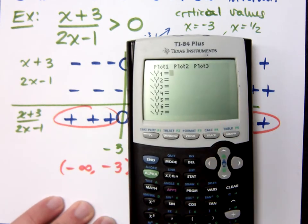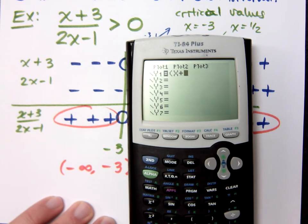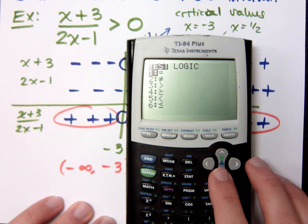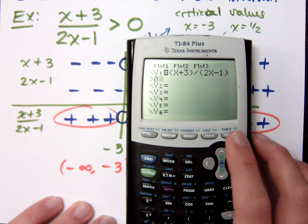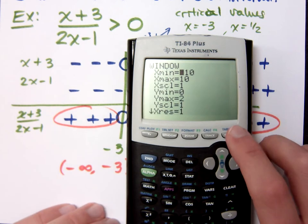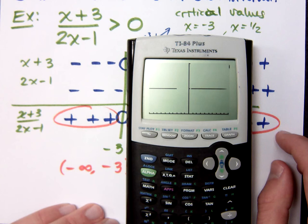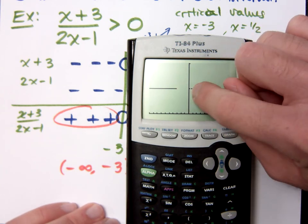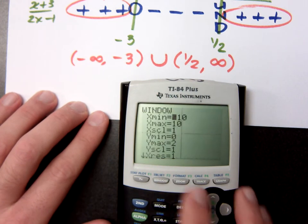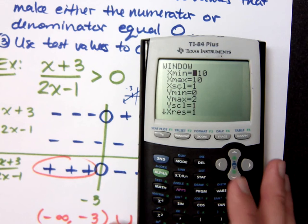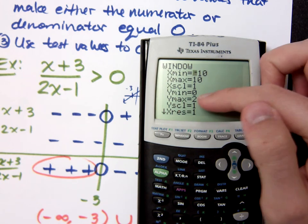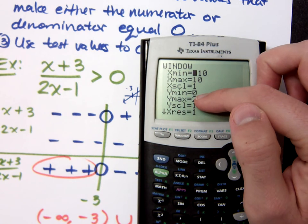Let's check on the graphing calculator. Type in parentheses x plus 3 divided by the denominator 2x minus 1, and ask whether this is greater than zero. Set the window from negative 10 to 10 for x, and y from 0 to 2. Since we're graphing a logical inequality, the output is either 0 or 1. You can see the solution stops at negative 3 and picks back up at positive one half, which matches our answer.